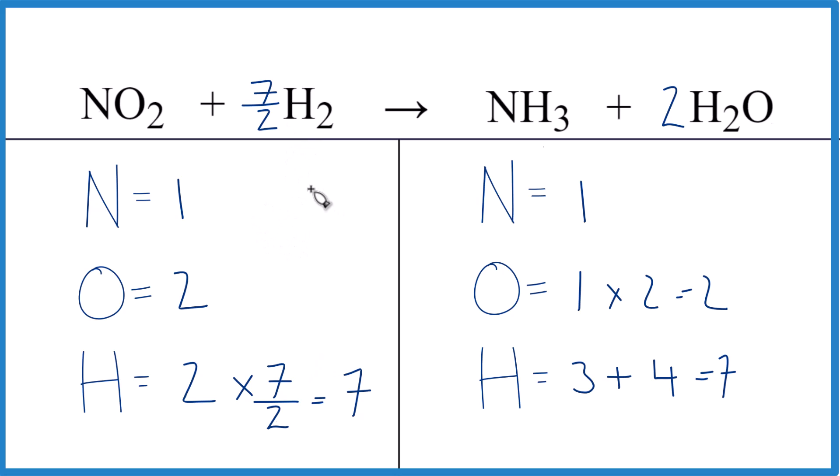If you don't like having these fractional coefficients, you could just double everything so you'd end up with two, seven, two, four as your coefficients, and these are the correct coefficients as well. Either set of coefficients works. We're really looking at the ratio, that's what's important in chemistry.